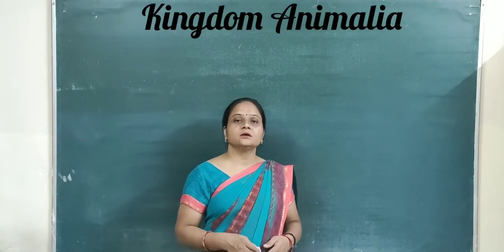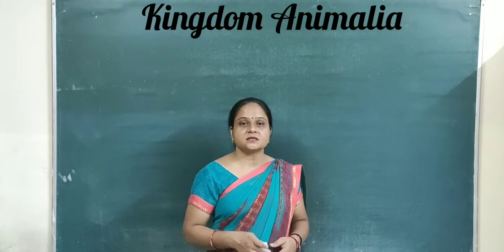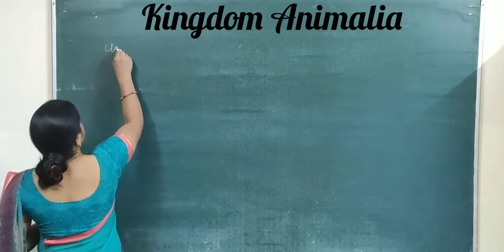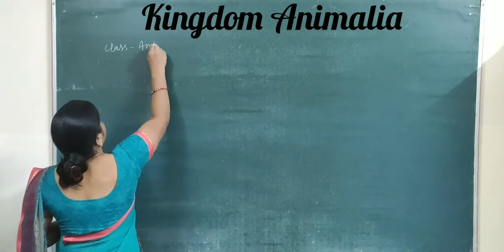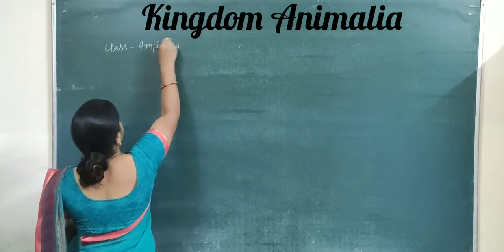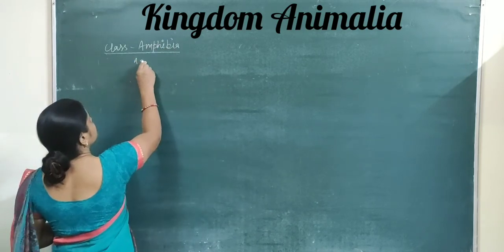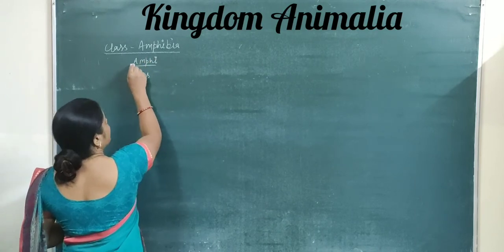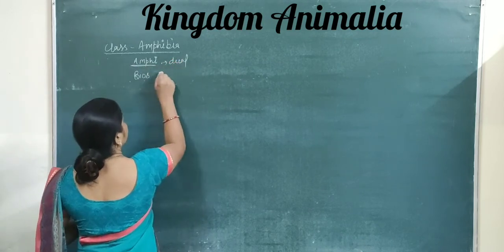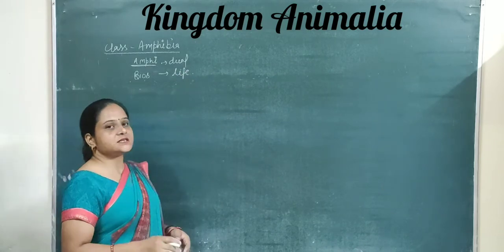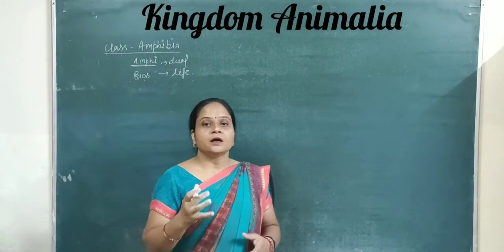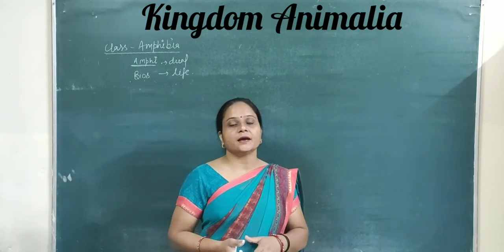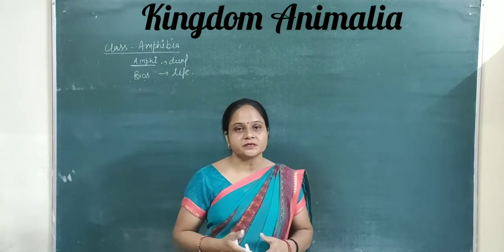We will discuss the next class from the superclass Tetracoda. The first class is Amphibia. This word 'Amphibia' is a mixture of two words: 'Amphi' meaning dual, and 'Bios' meaning life. Organisms belonging to this group pass their lives in two different habitats — one habitat is aquatic and another is terrestrial.